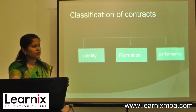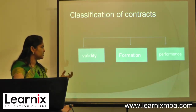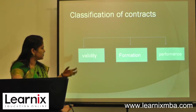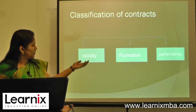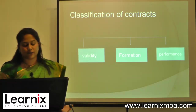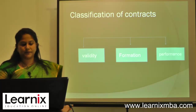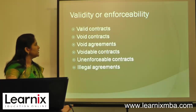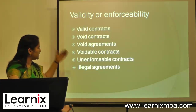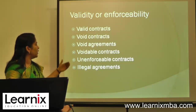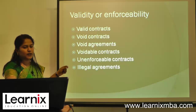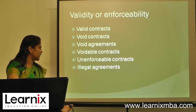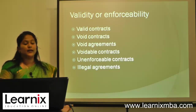Classification of contracts: contracts are basically classified on the basis of validity, formation, and performance. Based on validity or enforceability, contracts are divided into valid contracts, void agreements, voidable contracts, unenforceable contracts, and illegal agreements.